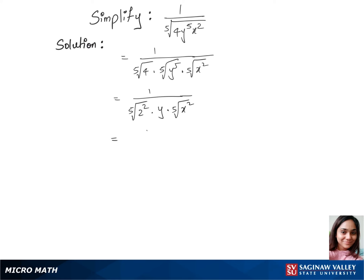Now we have 1 over, let's join both 5th roots together. So that's 5th root of 2 power 2 and x power 2 under one root times y equals. Now we have 1 over y times 5th root of 2 power 2 x power 2.